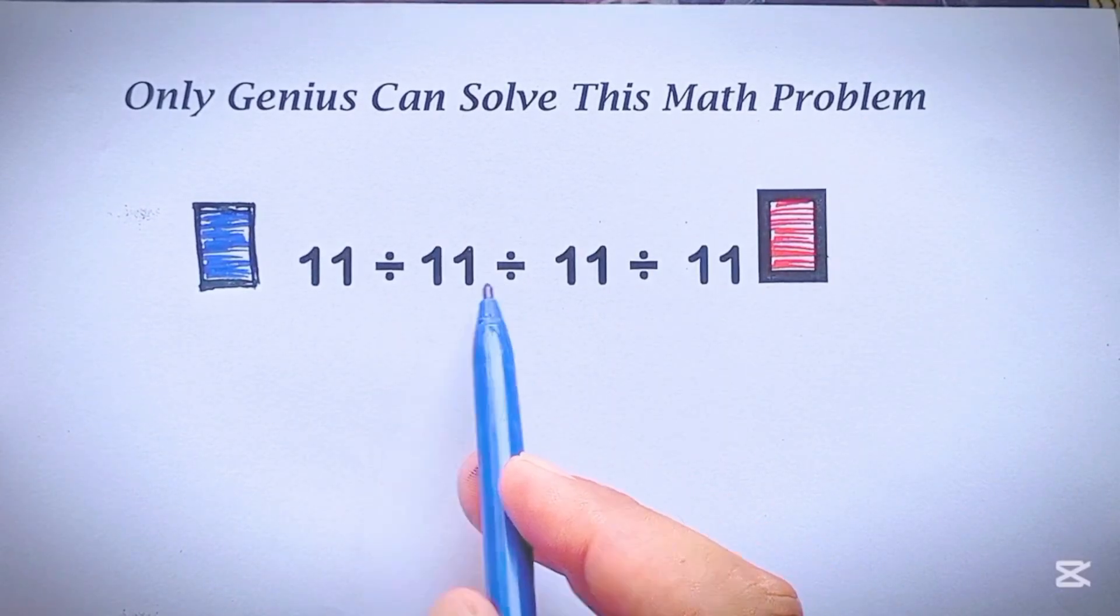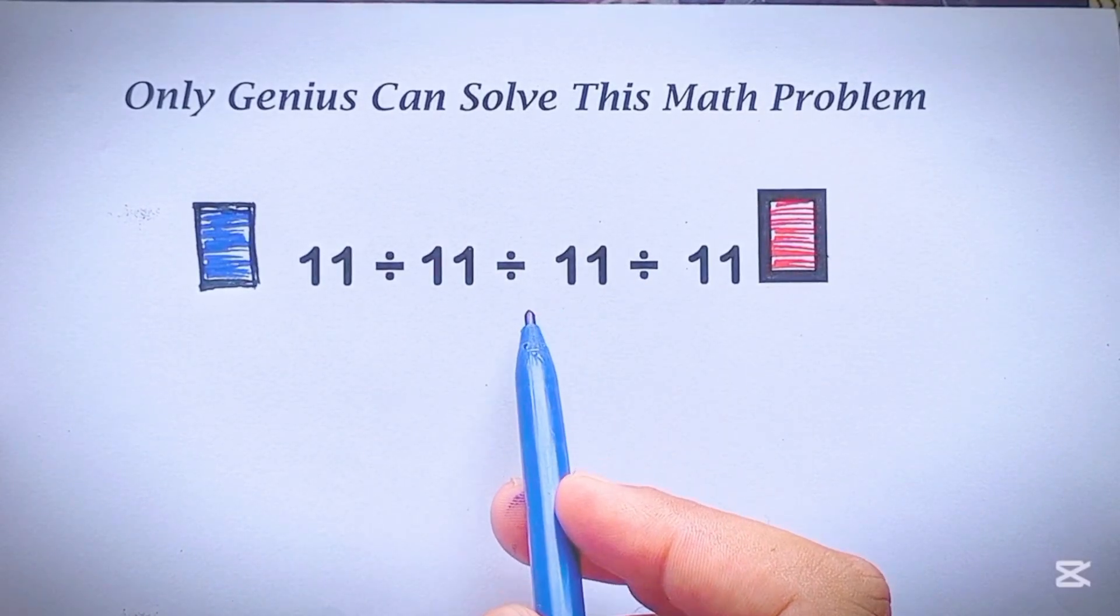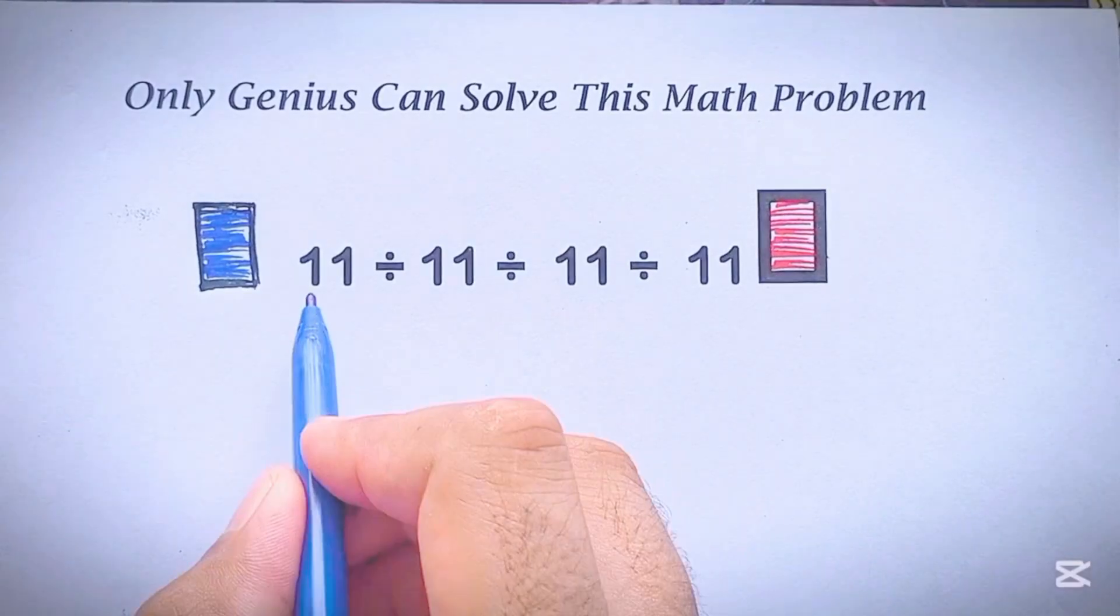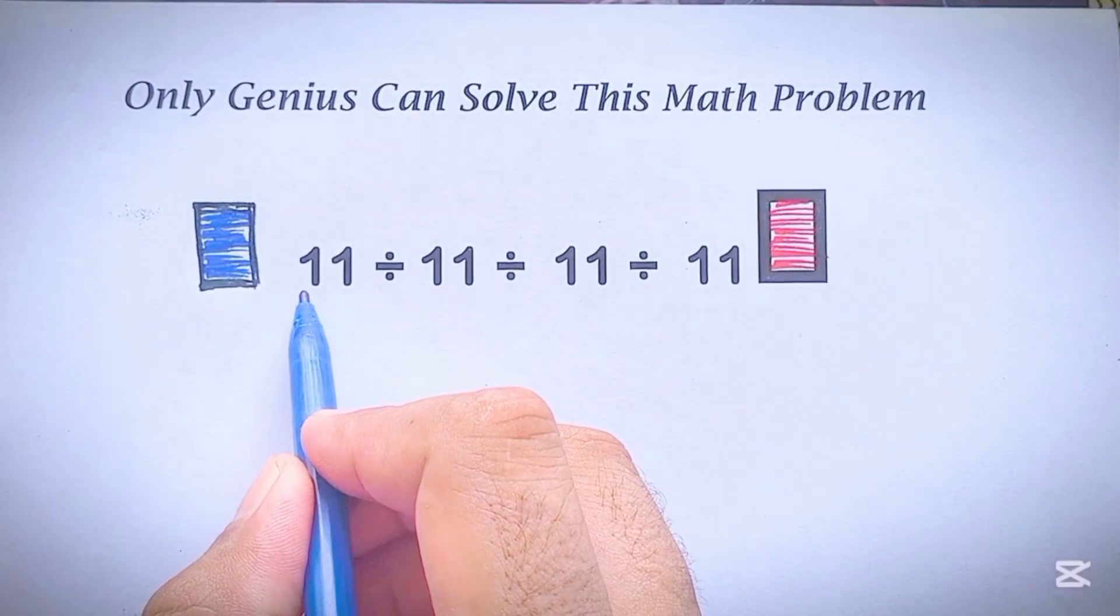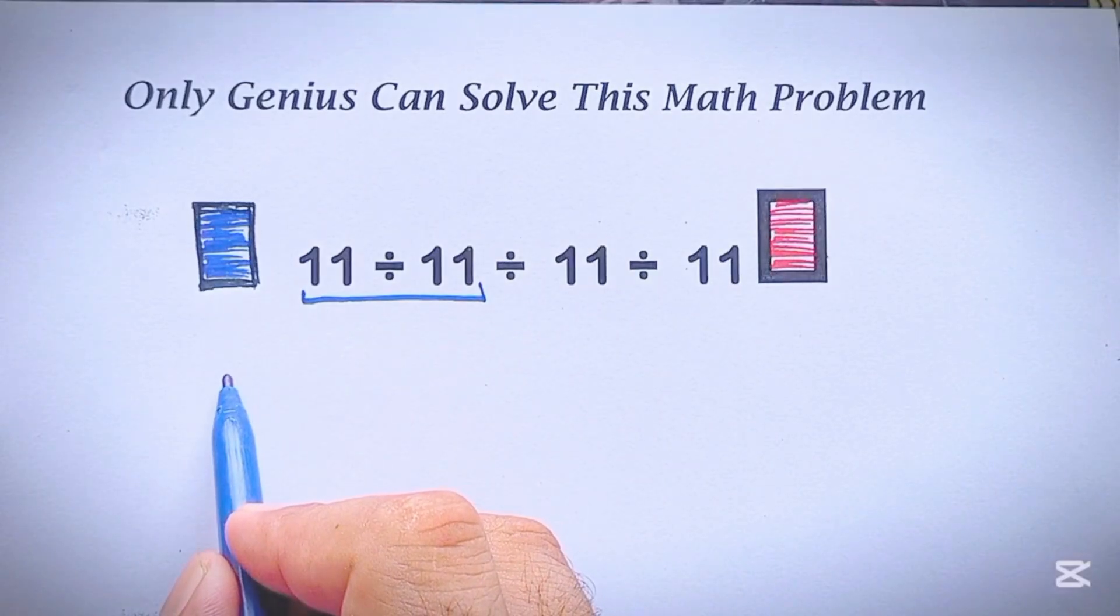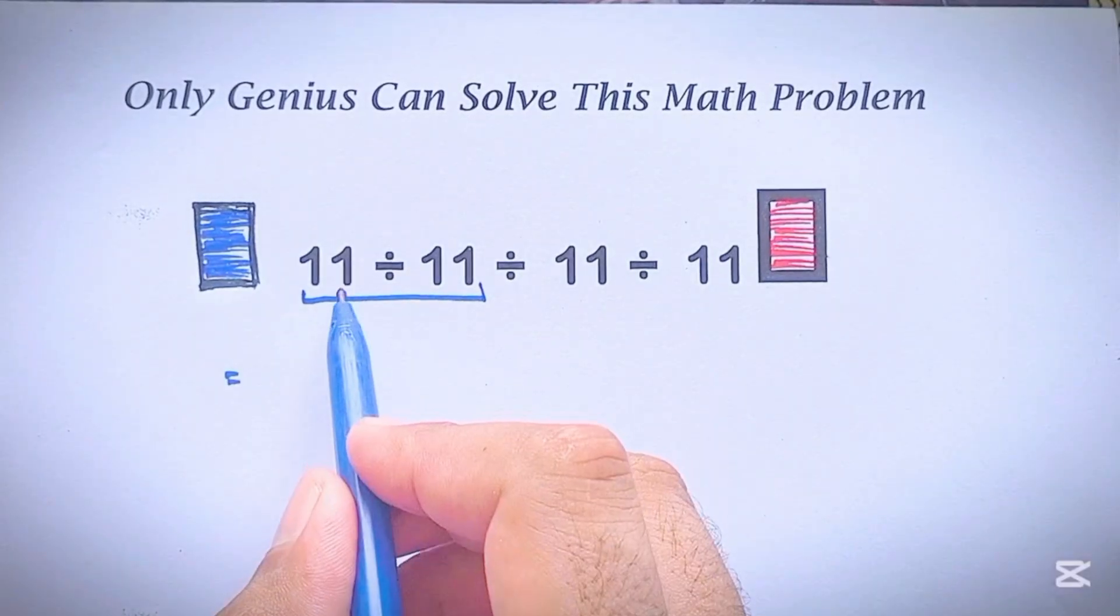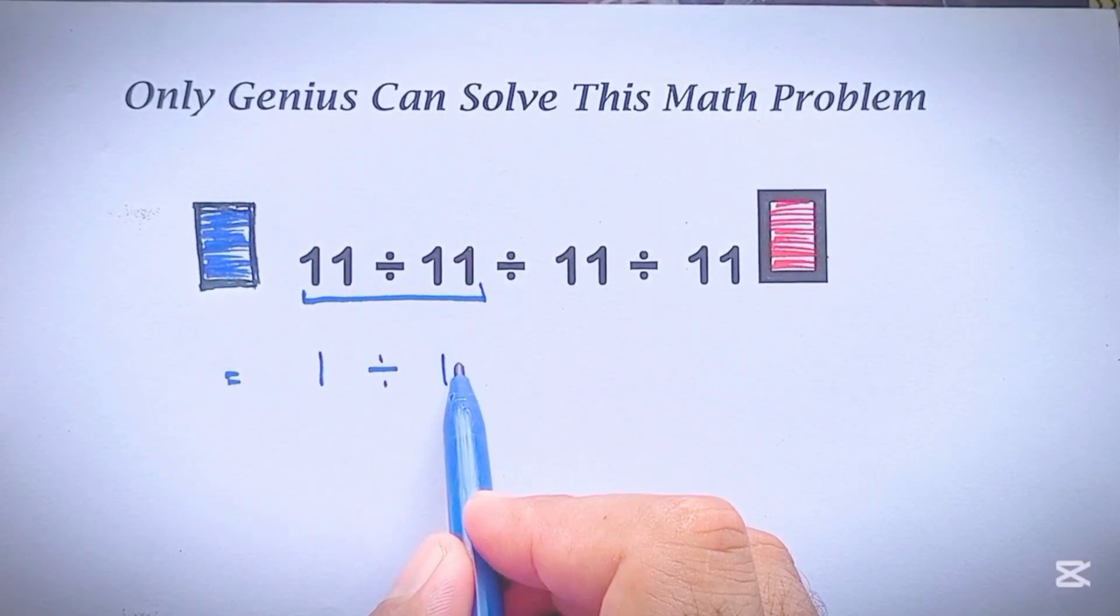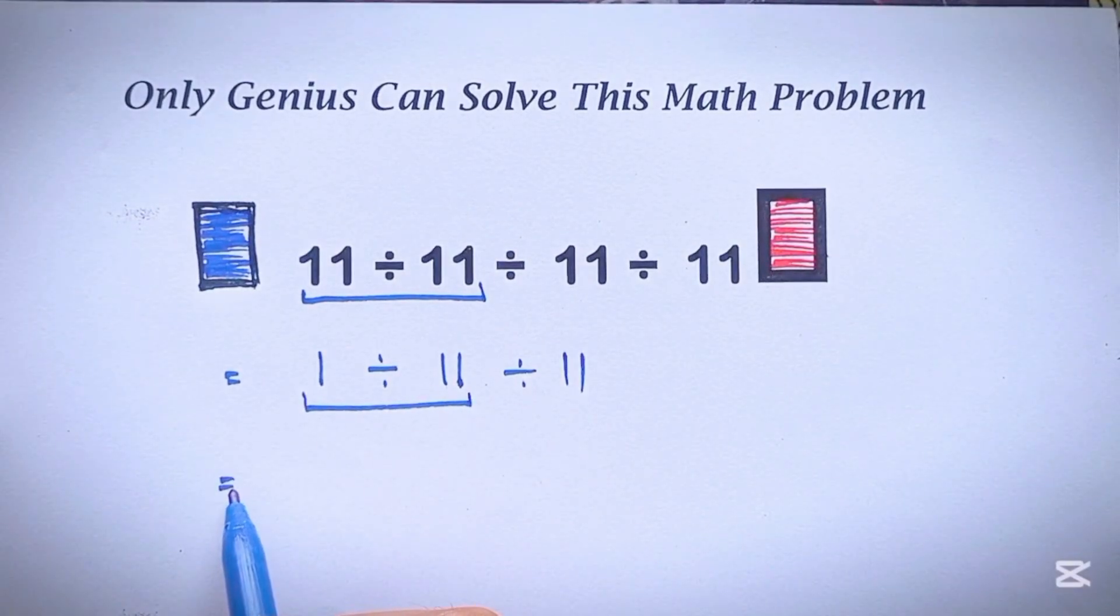In this expression, we have three divisions. And when we have more than one division in one expression, we have to work from left to right. So first, this division, 11 divided by 11 gives us 1. So, 1 divided by 11 divided by 11, 1 divided by 11. We can write 1 over 11.